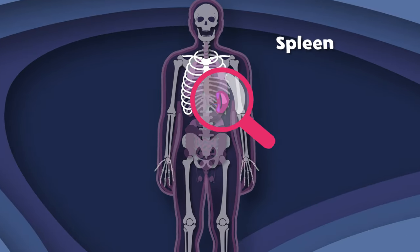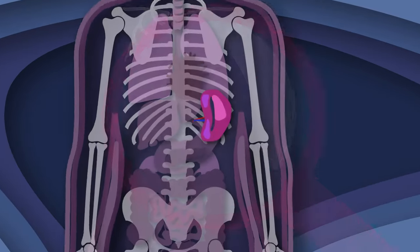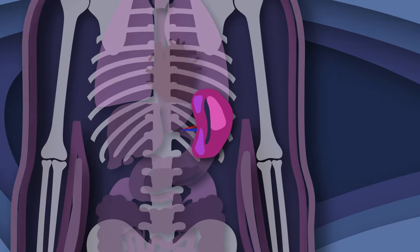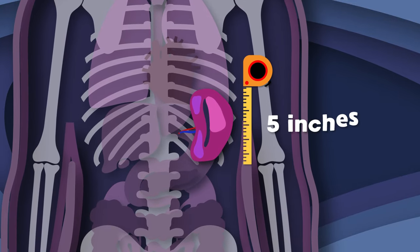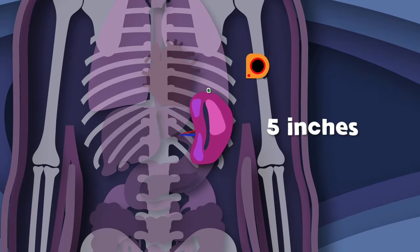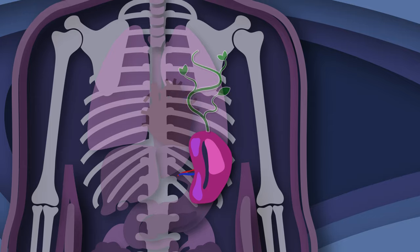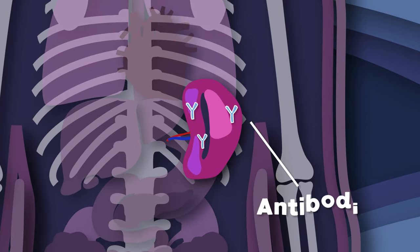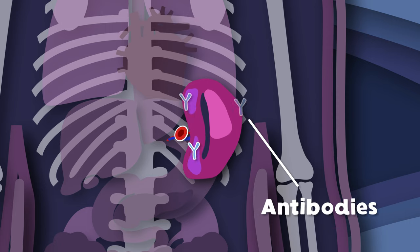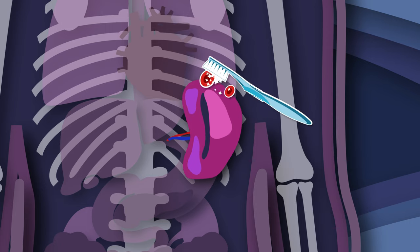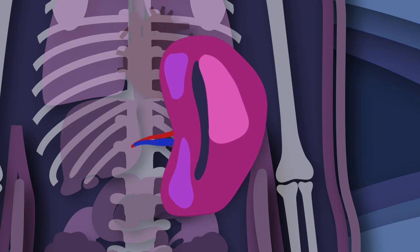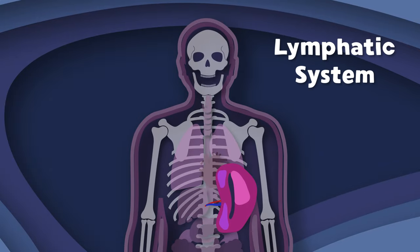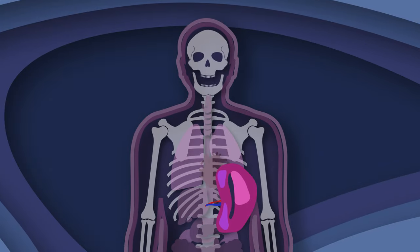I am your spleen. You will learn what this means. I am purple, 5 inches long, and I'm shaped like a bean. I'm your spleen. You will learn what this means. I produce antibodies and I keep your blood clean. I'm the spleen, the largest organ in the lymphatic system. You don't need me, but if removed from your body, you'll be more prone to infection.